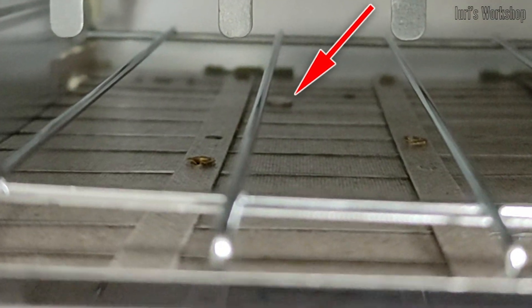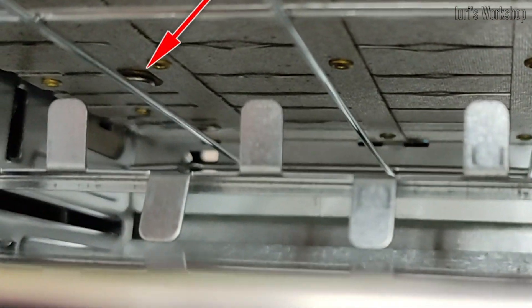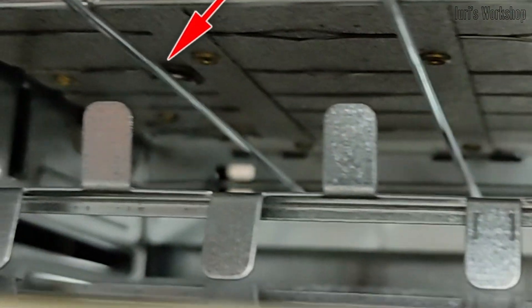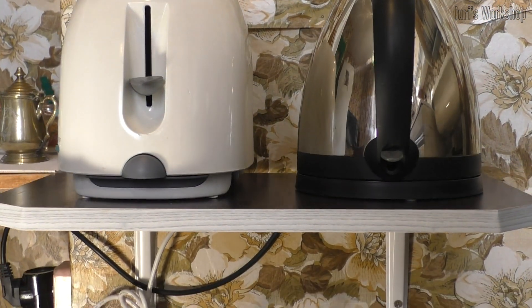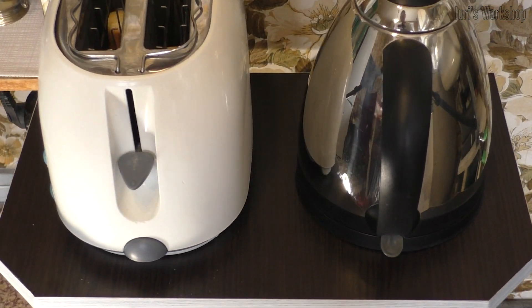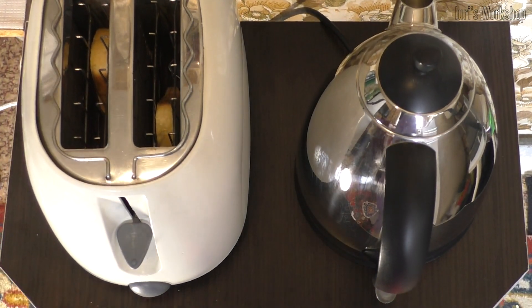Each heater should have only two rivet contacts or two lamella type contacts located at the edges of the heater. If you see a third rivet or lamella on one of the heating elements, then this toaster will fail in a few years.